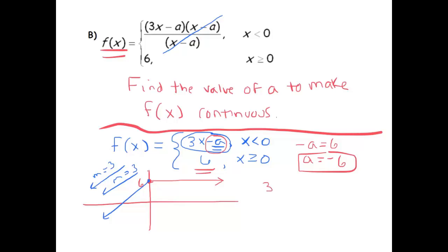A more algebraic approach might be just say okay, well if I plug in 0 into the top function, 3 times 0 minus a, we need this to equal 6 because we need these two pieces to link up. And so that gives me negative a is equal to 6, or a is equal to negative 6.